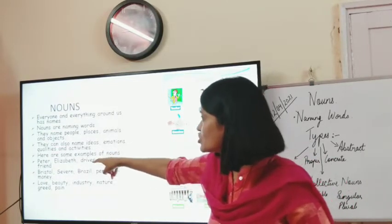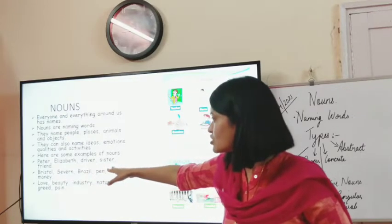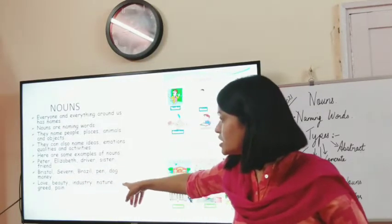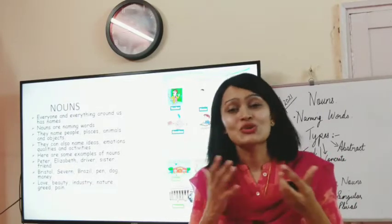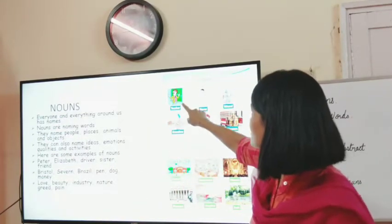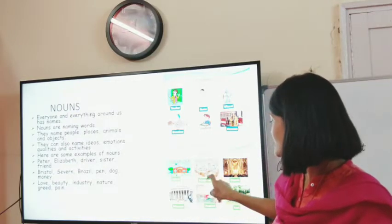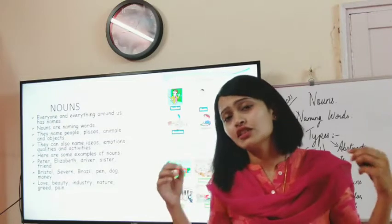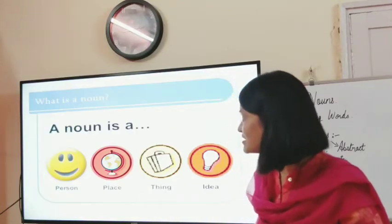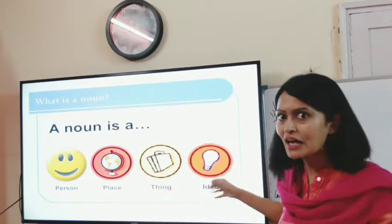Here are some examples of nouns: Peter, Elizabeth, driver, sister, friend — these are people. Bristol and Brazil are places. Pen, dog, money are things — money is a thing. Love, beauty, nature, pain — pain is an emotion. So all these are nouns. All names of animals, people — teachers, student, fireman — all names of places — hospital, museum, restaurant, park — all names of emotions. Everything is a noun.